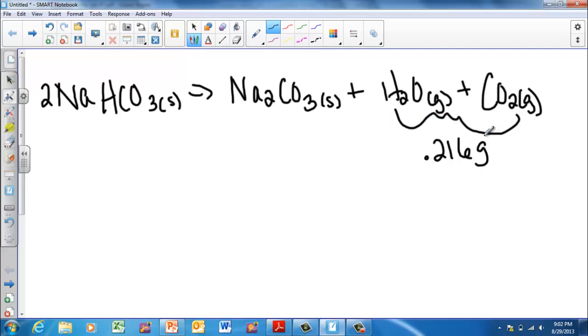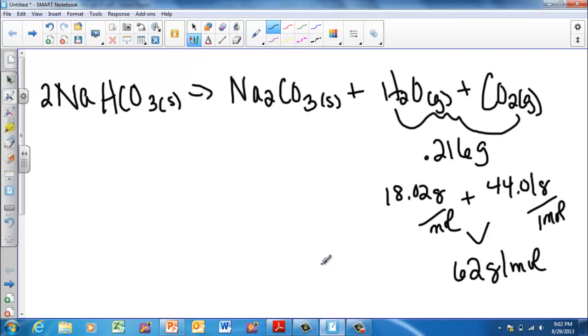So this 0.216 grams essentially is going to represent, what we're going to do is all of this product, and we're going to consider all of this product to kind of be one mole of one giant molecule. And if we take the molar mass of water, water is going to be 18.02 grams per mole. And if we add it to carbon dioxide, which is 44.01 grams per one mole, we can kind of get this total molar mass for this substance of 62 grams per mole.